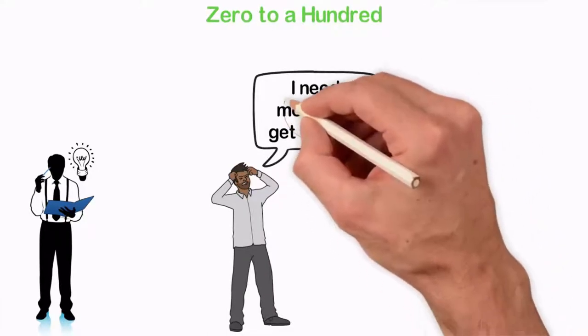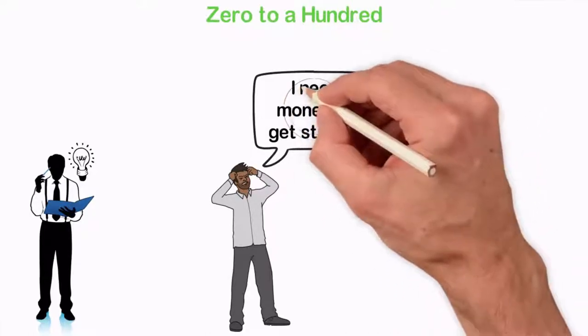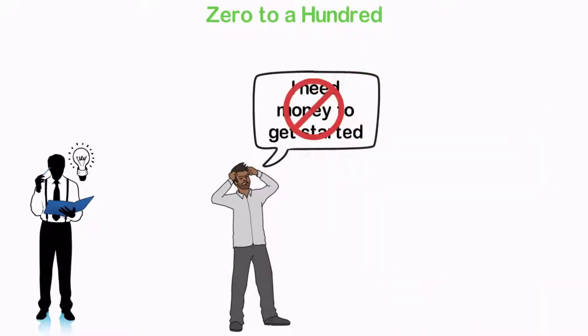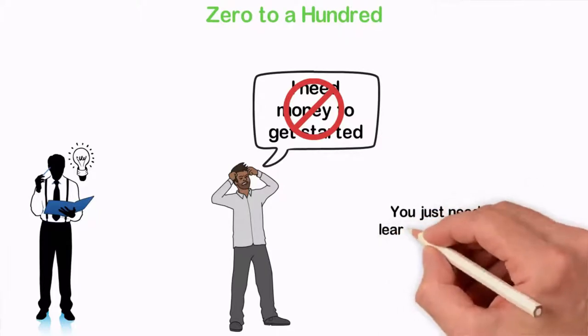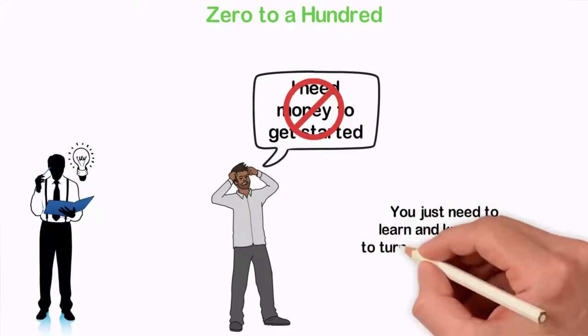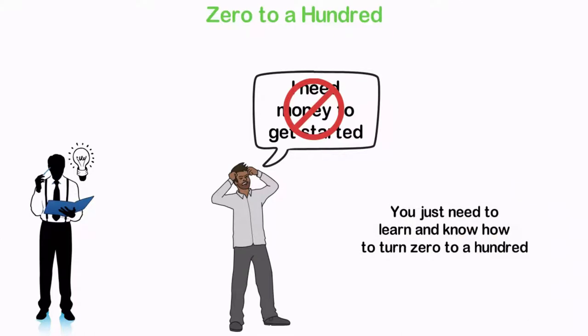When people wait for the 50 they will turn to 100, most times they will not see the 50 and then they will make excuses that the reason why they can't start a business is that they don't have money. No, you don't need to have money to build a business. You just need to learn and know how to turn zero to 100.